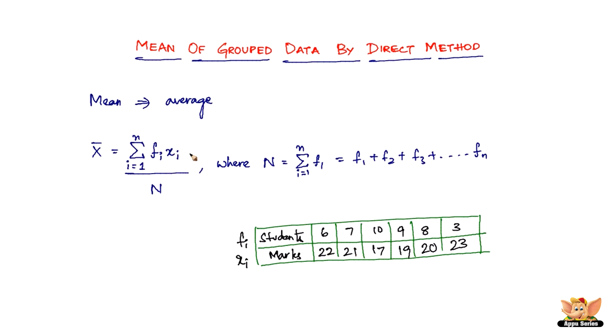So 6 times 22 plus 7 times 21, that is what this gives you. As far as the N is concerned, this is the frequency: 6 plus 7 plus 10 plus 9 plus 8 plus 3 and so on. If this says summation of fi, that means f1 plus f2 plus f3 and so on. If this says summation of fi xi, it means f1 x1 plus f2 x2 plus f3 x3 and so on.